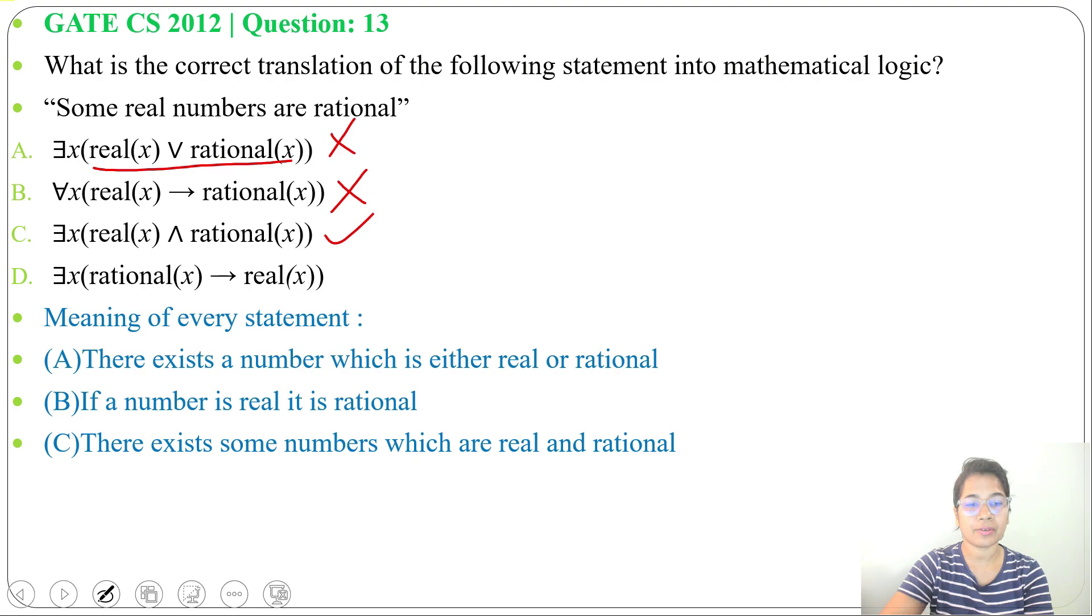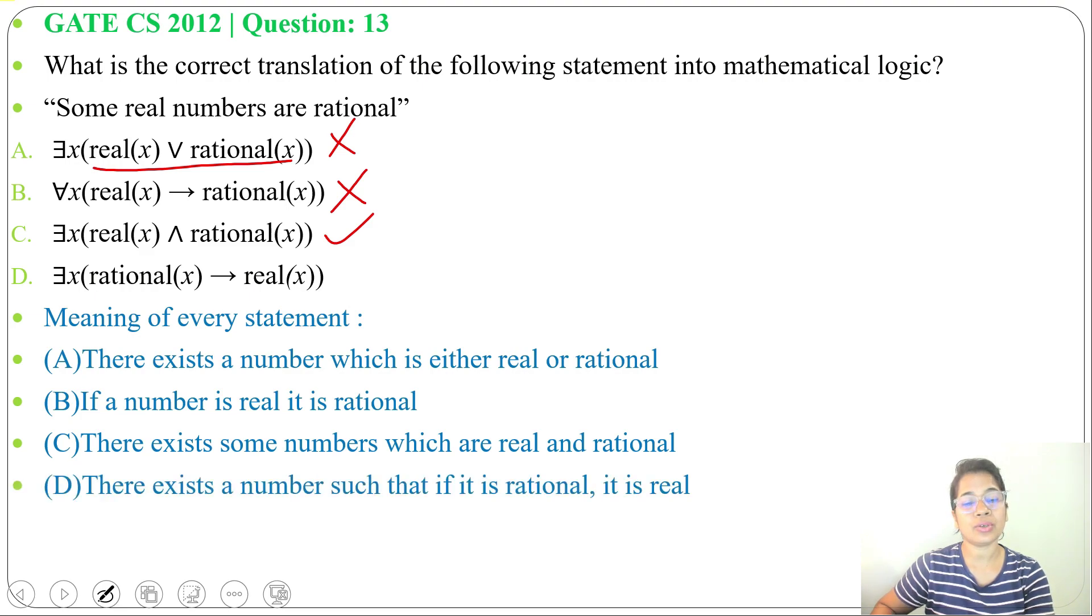Next, option D: there exists x, rational(x) → real(x). So there exists a number x such that if x is rational, then it's also real. This is not the answer, so the answer will be option C. I already discussed predicate logic, just go through the lecture.